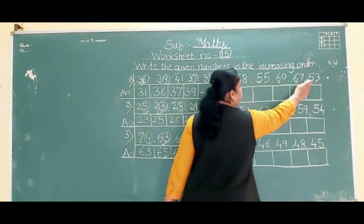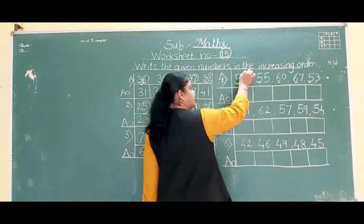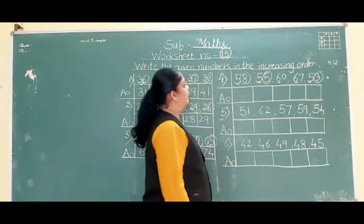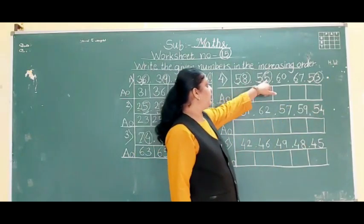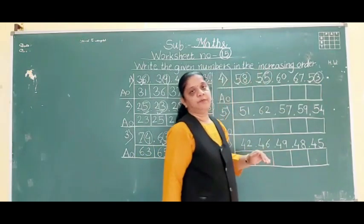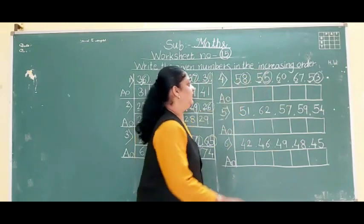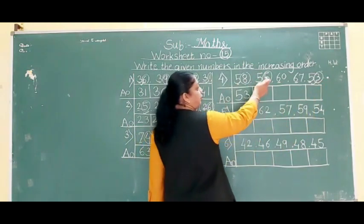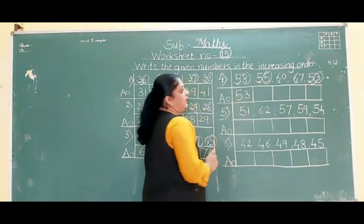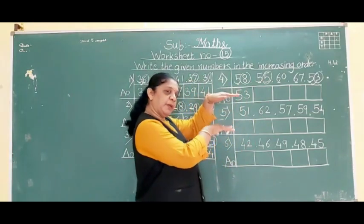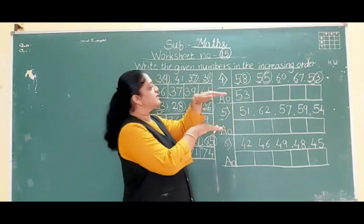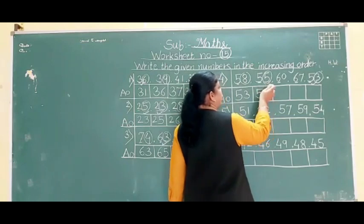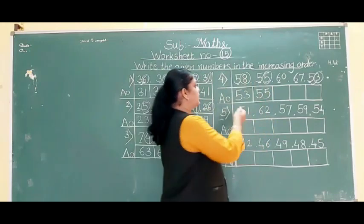For the 5-group, second digits are 8, 5 and 3. Which is smallest? 3. So 53 comes first, then 5 is above and 8 is below — so 55 comes next, then 58.